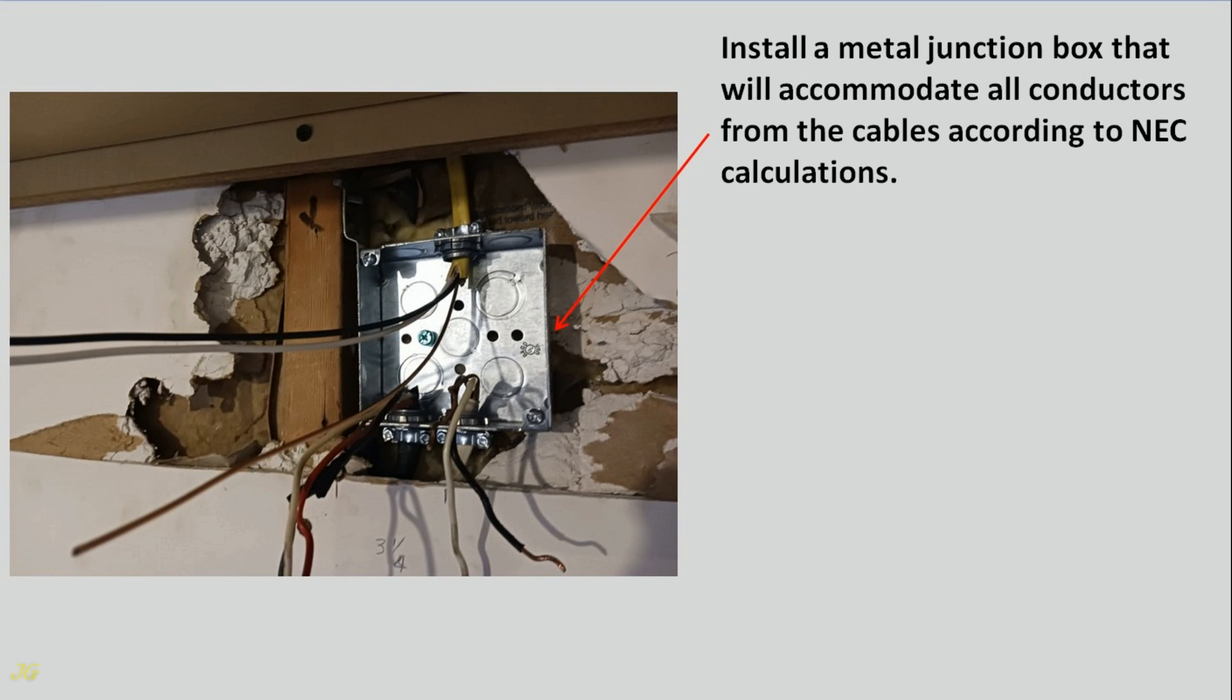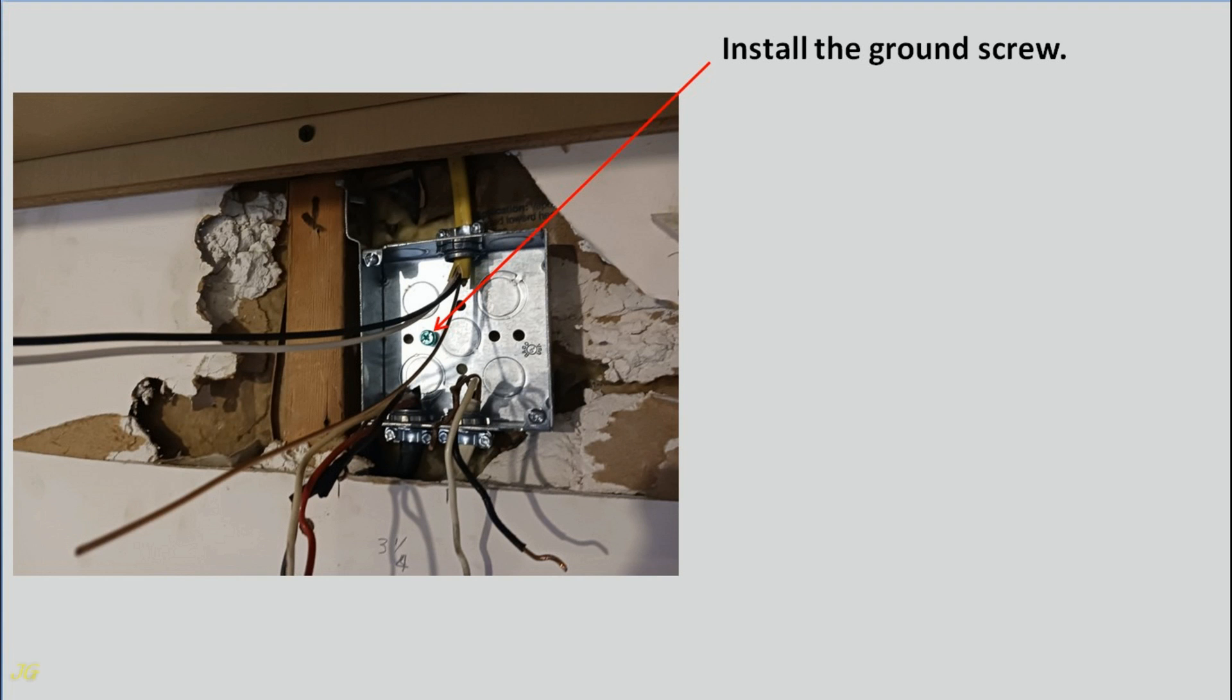Install a metal junction box that will accommodate all conductors from the cables according to NEC calculations. Install the ground screw.